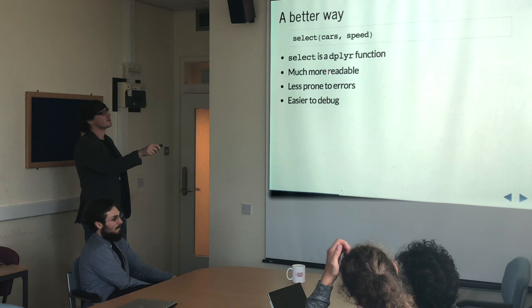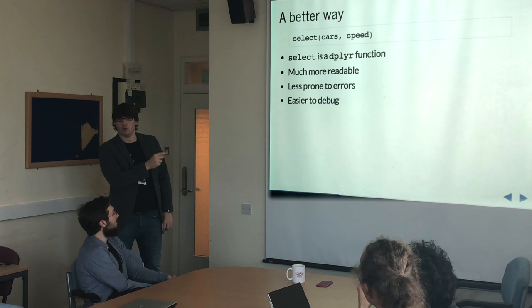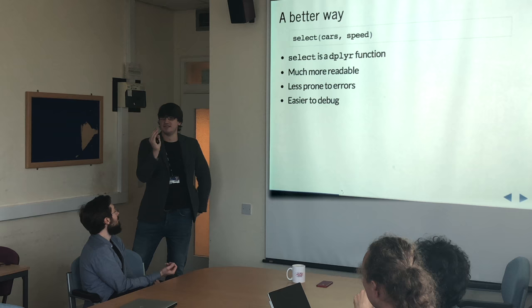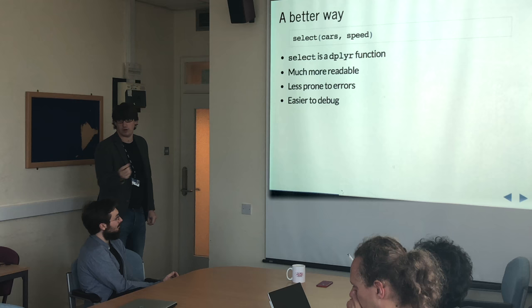There is a library called dplyr — it's a stupid name, but it has history. It's part of the Tidyverse. What it does is define all these functions like select. The idea is to make everything more readable — instead of having indexes, numbers and commas randomly all over the place, you can just say what you want to select, and you know it's going to return a column or a number of columns.